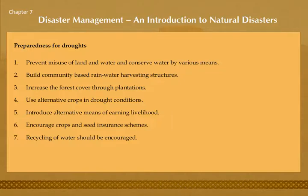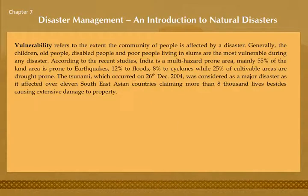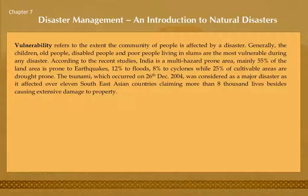Vulnerability refers to the extent a community of people is affected by a disaster. Generally, children, old people, disabled people, and poor people living in slums are the most vulnerable during any disaster. According to recent studies, India is a multi-hazard prone area: 55% of the land area is prone to earthquakes, 12% to floods, 8% to cyclones, while 25% of cultivable areas are drought-prone. The tsunami which occurred on 26 December 2004 was considered a major disaster, affecting over 11 Southeast Asian countries and claiming more than 8,000 lives, besides causing extensive damage to property.